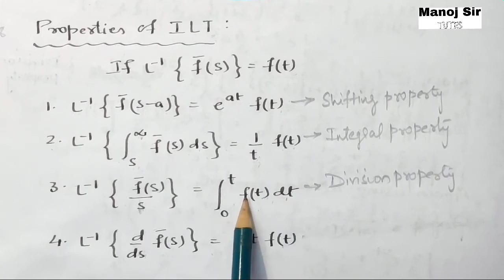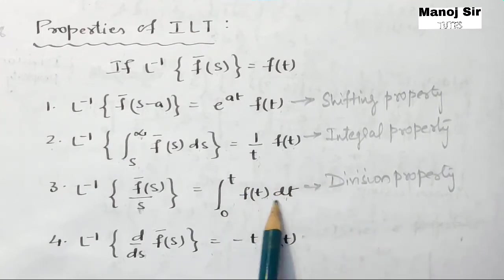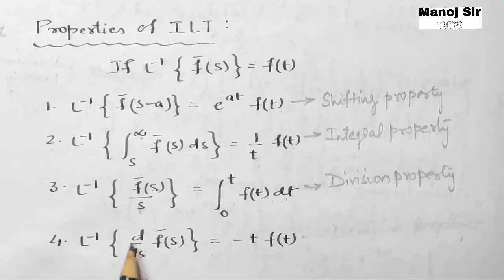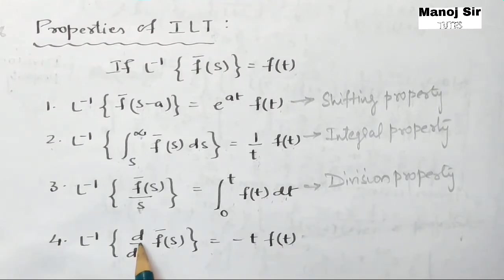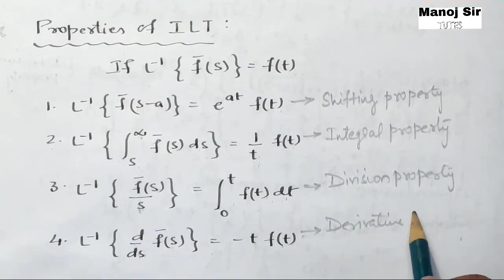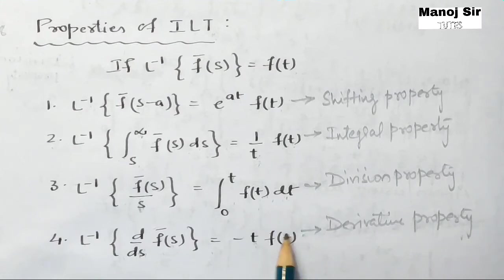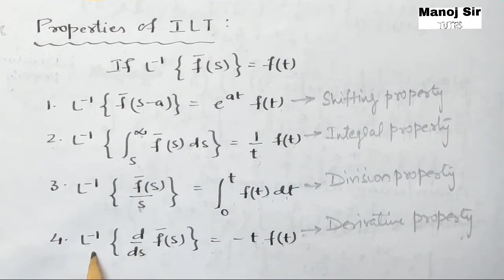Again repeating: integral property in the case of Laplace transform becomes division property in the case of inverse Laplace transform. Now the last part — inverse Laplace transform of d upon ds of f-bar of s equals minus t times f(t). Here d upon ds means this is the derivative property. And t into f(t) means this is the multiplication property. So multiplication property in the case of Laplace transform becomes derivative property in the case of inverse Laplace transform.